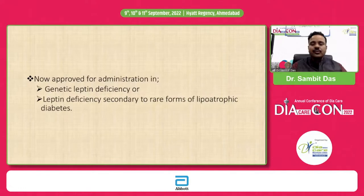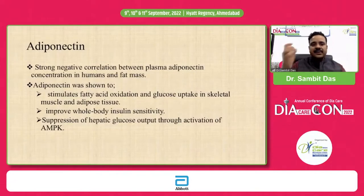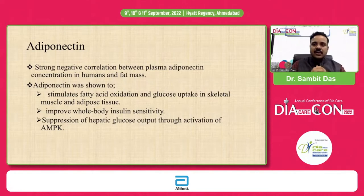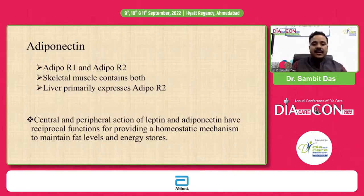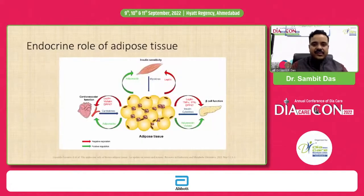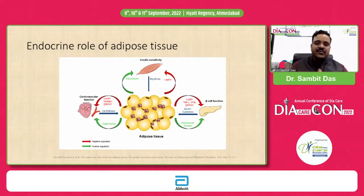Adiponectin has a strong negative correlation with body fat mass — it is essentially a beneficial adipokine. It stimulates fatty acid oxidation and glucose uptake in skeletal muscle, reduces insulin resistance, and suppresses hepatic glucose output through activation of AMP kinase. It acts via two receptor types: AdipoR1 predominates in skeletal muscle, while the liver primarily expresses AdipoR2. The central and peripheral actions of adiponectin and leptin are reciprocal — adiponectin improves cardiovascular function, insulin sensitivity, and beta cell function, in contrast to leptin, visfatin, and DPP-4, which can adversely affect these systems.